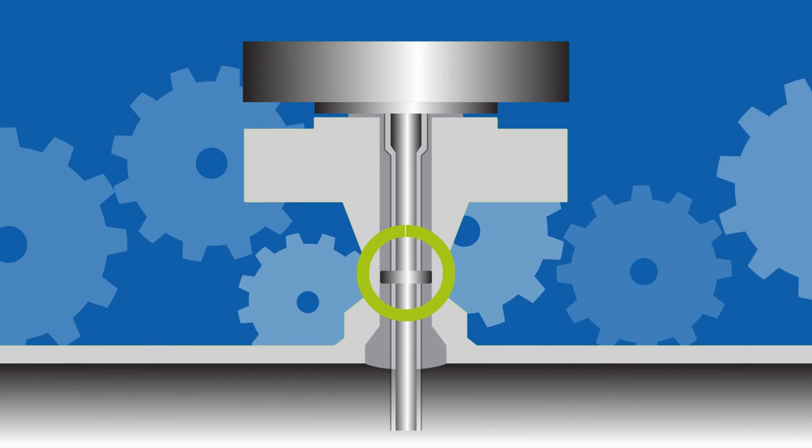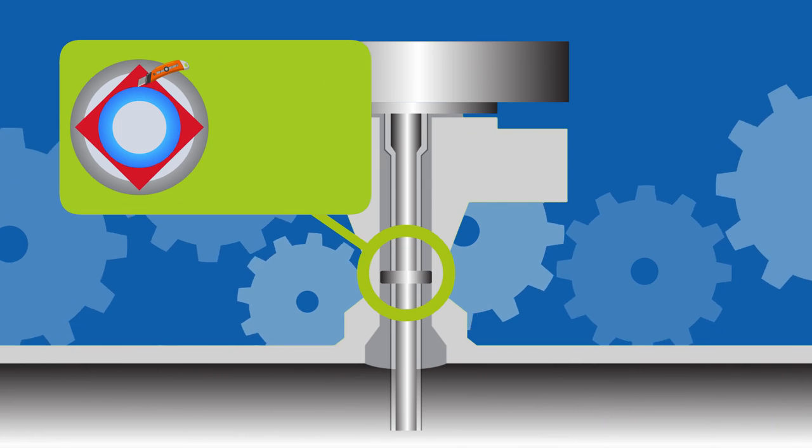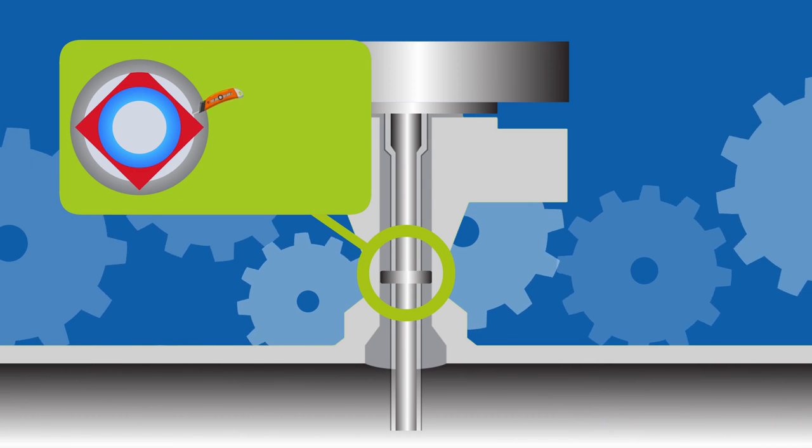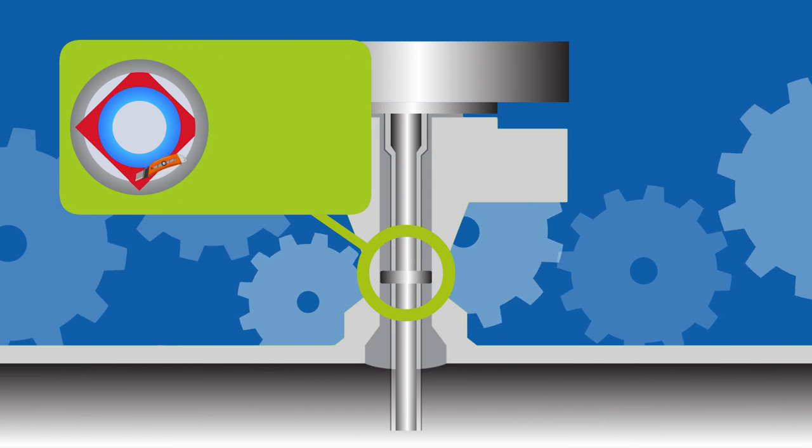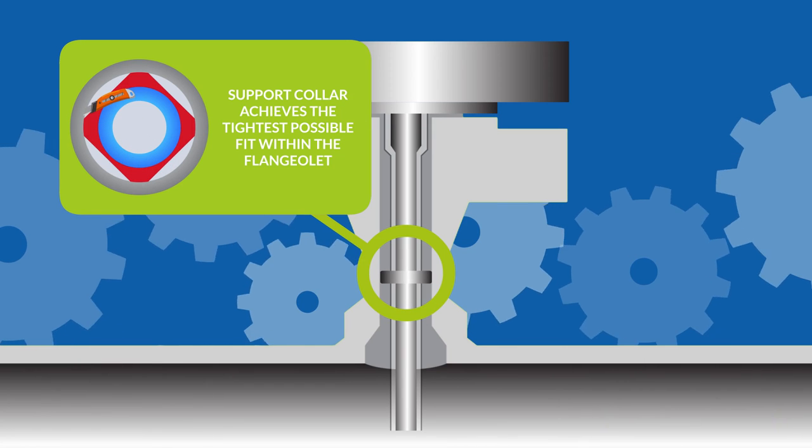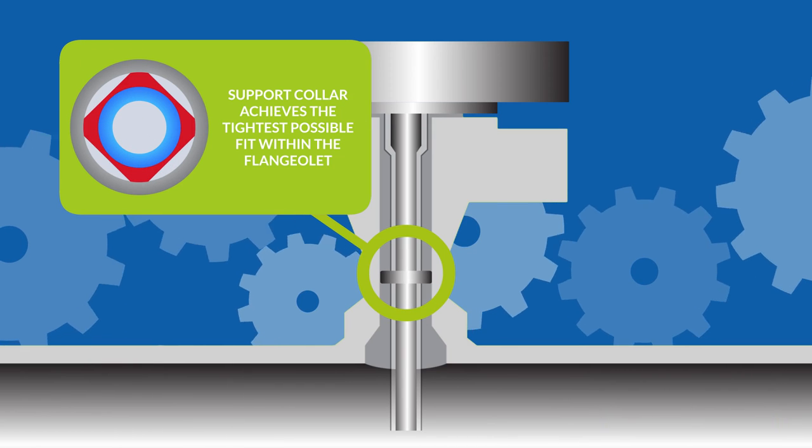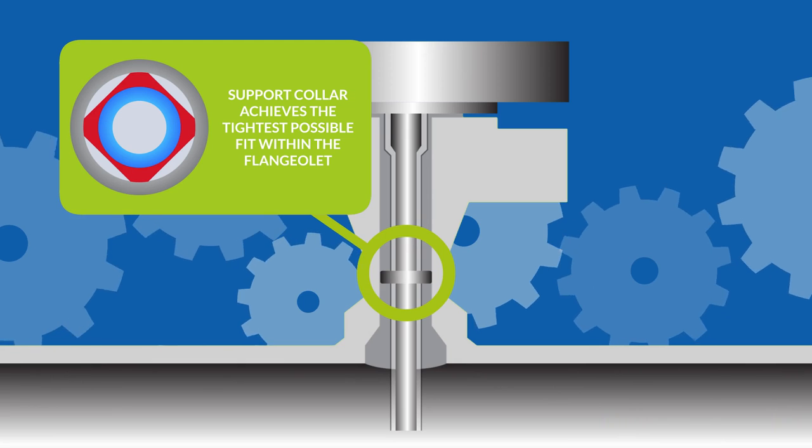On site, the installer will place the injection or sampling DBB valve on top of the flangeolette and evenly cut off some material from the four-point collar so that the collar achieves the tightest possible fit within the flangeolette.